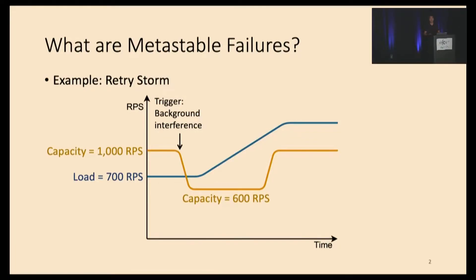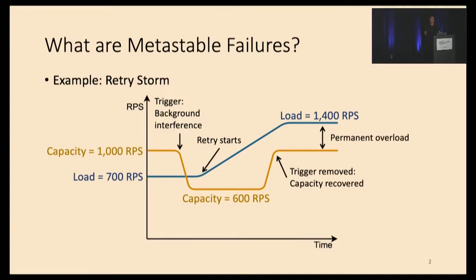Because of the overload, requests start to timeout and retries start. Suppose each request can retry at most one time — it can eventually lead to your load increasing to 1,400 requests per second. And until that time, even after you fix the trigger, the capacity is still below the current load and your system remains overloaded. This is a metastable failure.